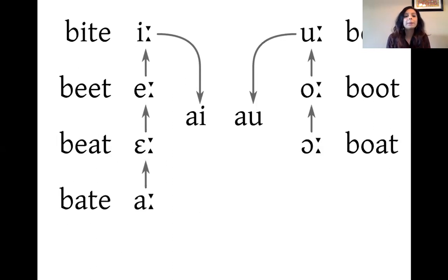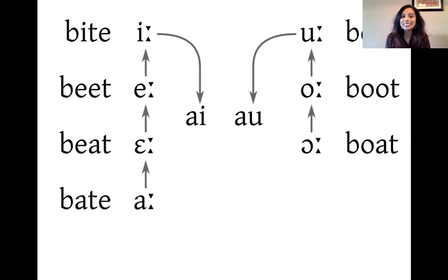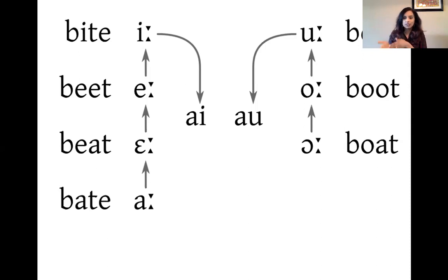Starting from the bottom: 'bait' was pronounced as 'bat' in Middle English. That vowel changed to 'a', so it became 'bait', which then became 'beat' — so the 'ee' sound — and then 'beat' became 'bite'. So you have the progression: 'bat', 'bait', 'beat', 'bite' — which is the diphthong. That's basically how the long vowels became diphthongs.